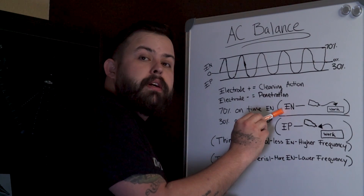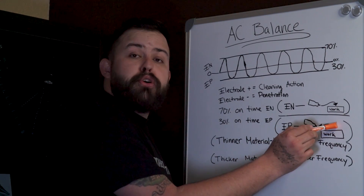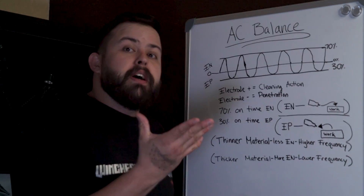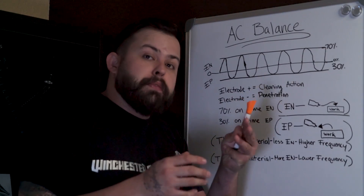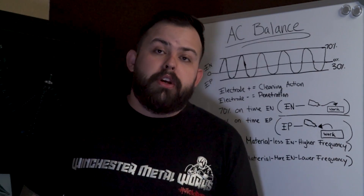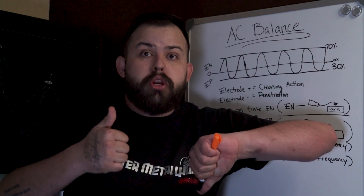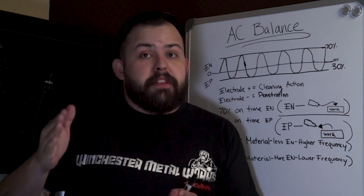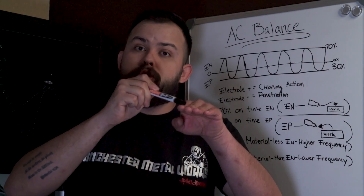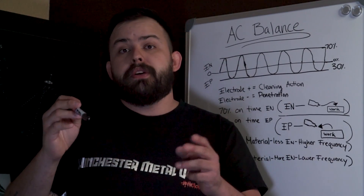Electrode negative is pushing current into your part and that's causing the penetration. Electrode positive is pushing current from your work into your tungsten — that's your cleaning action, breaking up the oxide layers. The EN part then pushes back in causing the penetration. As a rule of thumb: on thinner material, you want your AC frequency to go up and your balance to go down — less penetration, more precision. When you get into thicker materials, decrease frequency and increase balance because you want more penetration, and the precise arc isn't as critical on thick material.